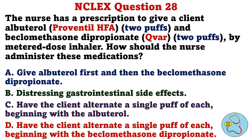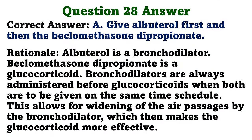The nurse has a prescription to give a client albuterol and beclomethasone dipropionate by metered dose inhaler. How should the nurse administer these medications? A. Give albuterol first and then the beclomethasone dipropionate. B. Give beclomethasone dipropionate first and then the albuterol. C. Have the client alternate a single puff of each beginning with the albuterol. D. Have the client alternate a single puff of each beginning with the beclomethasone dipropionate. The correct answer is A: give albuterol first and then the beclomethasone dipropionate. Albuterol is a bronchodilator. Beclomethasone dipropionate is a glucocorticoid. Bronchodilators are always administered before glucocorticoids when both are to be given on the same time schedule. This allows for widening of the air passages by the bronchodilator, which then makes the glucocorticoid more effective.